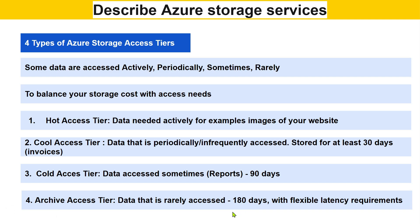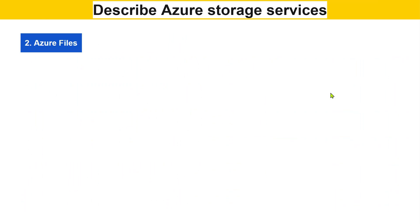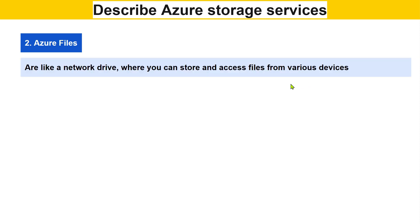Archive has flexible latency requirements — you can keep data for one year or 365 days, it's flexible to select your own latency needs. The second storage service type is Azure Files, which is more like a network drive service where you can store and access files from various devices over the internet.